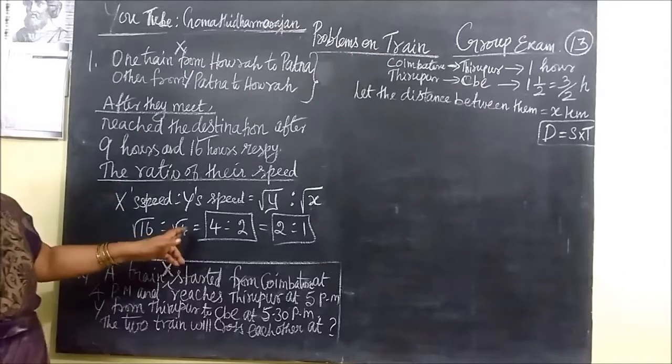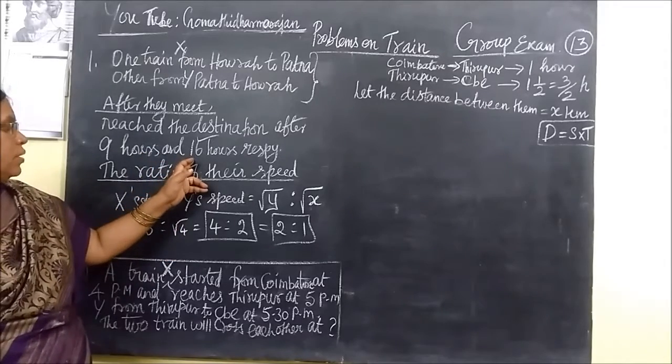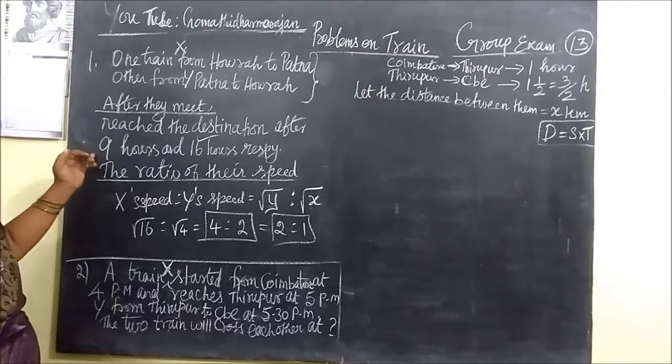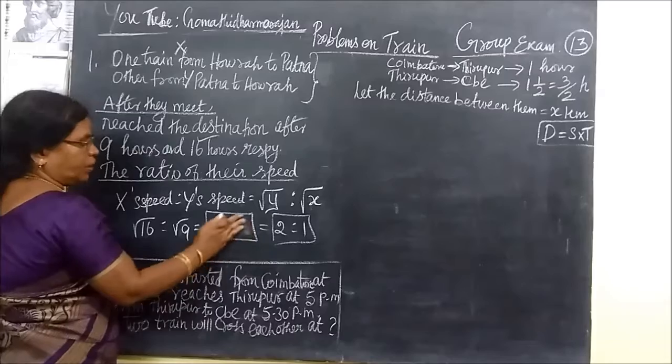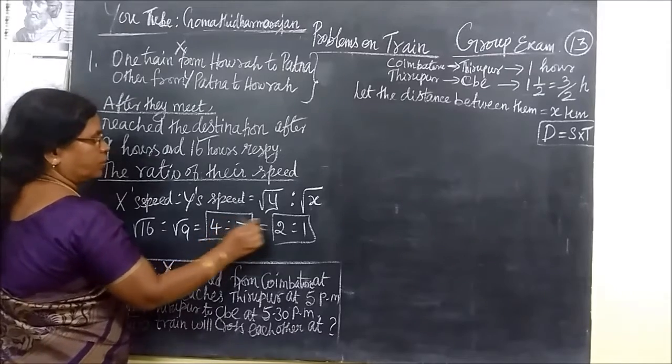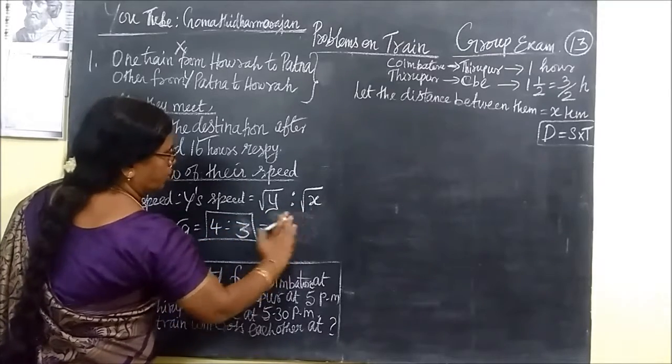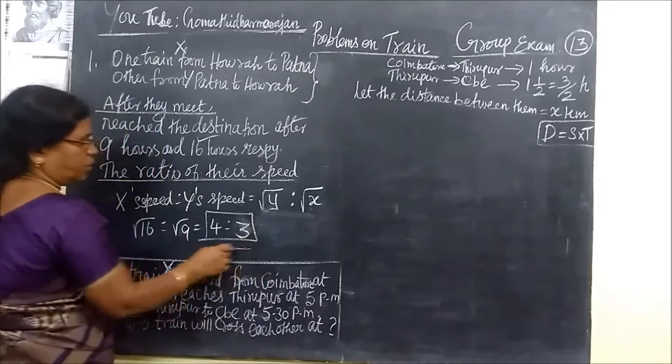You are writing the time taken by the second train is to the time taken by the first train. Sorry. That is 9. 4 is to 3. So this answer is, answer is 4 is to 3.